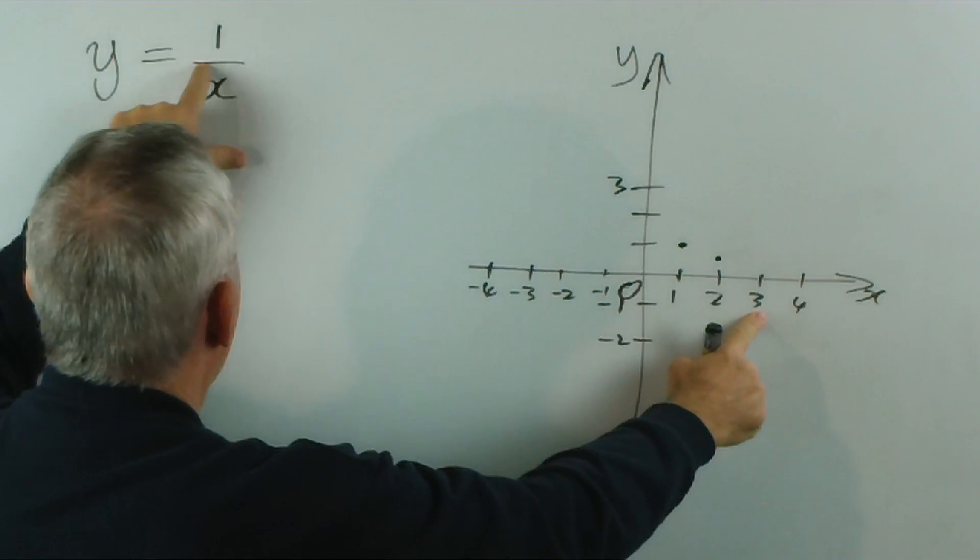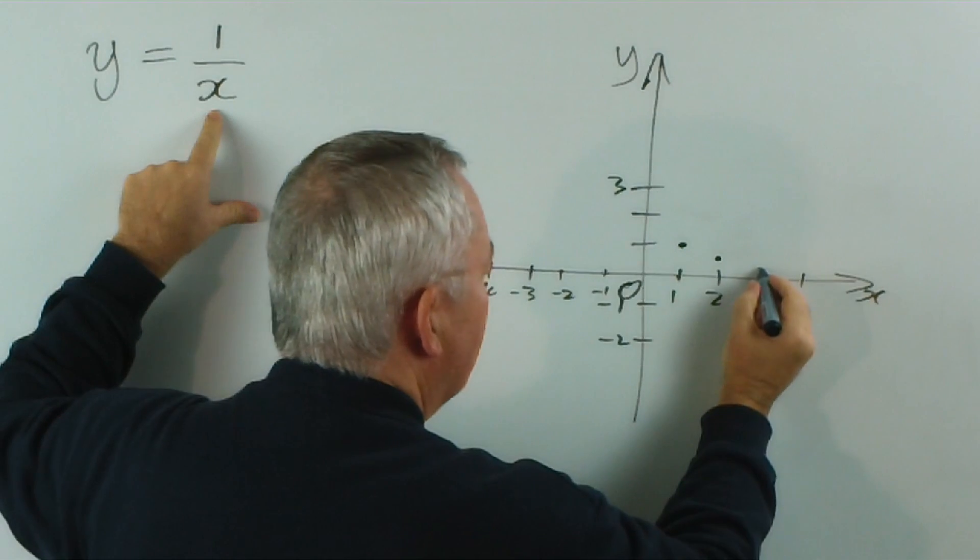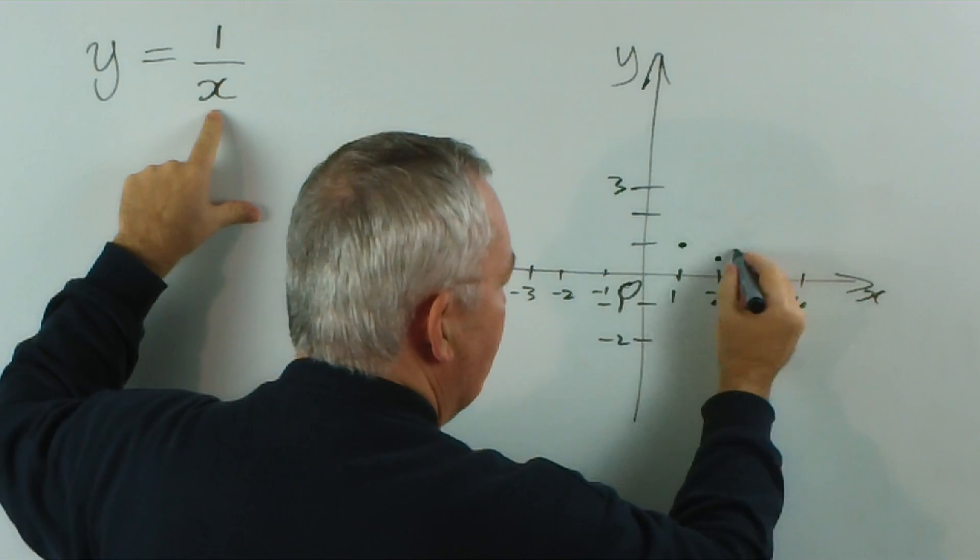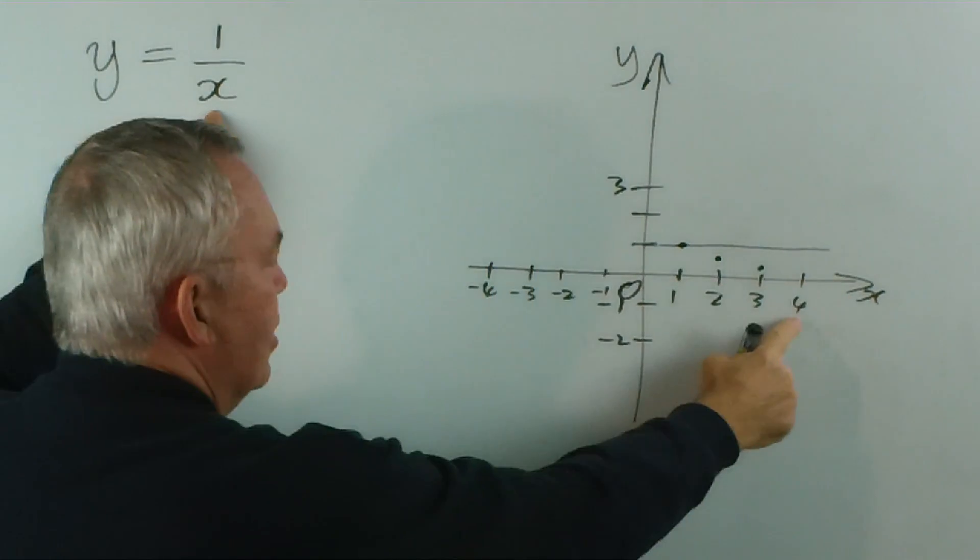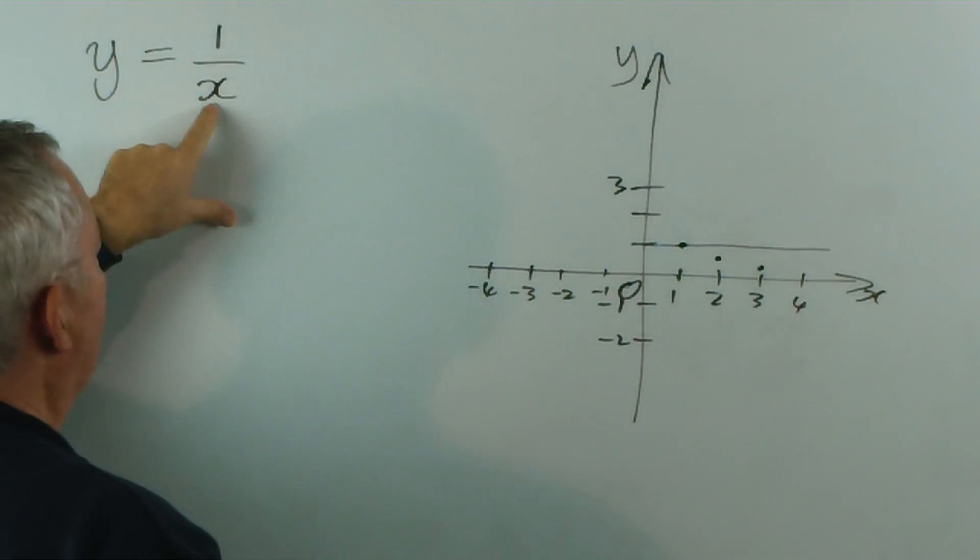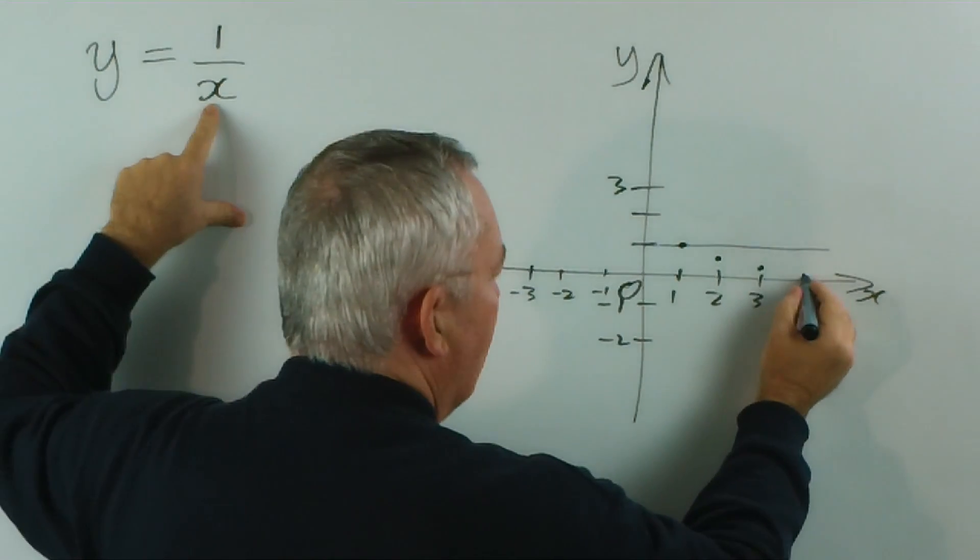When I put in x equals 3, I get 1 over 3, which is 1 third. I'm trying to estimate here if this is 1. So a third will be about here. And if I substitute 4, I get 1 over 4, which is 1 quarter.